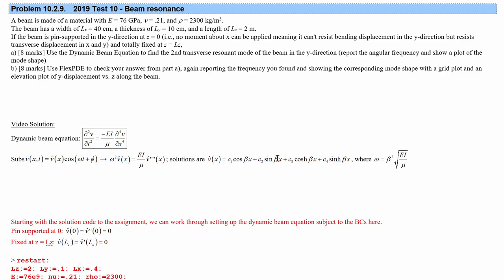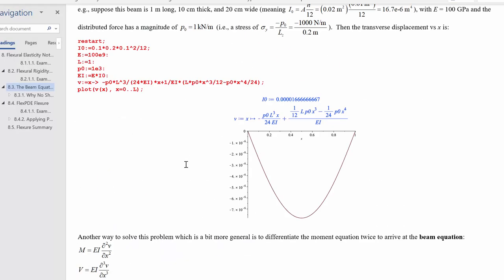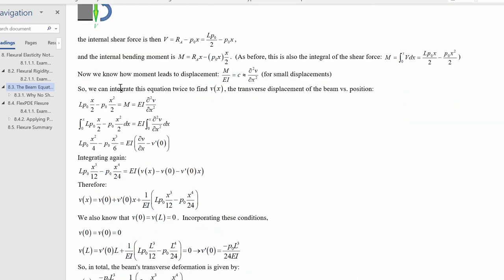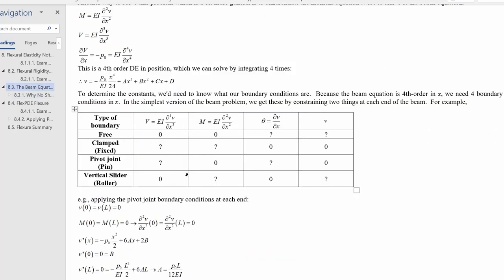This ODE allows us to apply boundary conditions to solve for 3 of the Cs and the betas that will make this work. We don't want to solve for all 4 Cs because that would eliminate flexibility needed when forming a linear combination. The boundary conditions come from the question's support description: pin-supported in Y at Z equals 0, and totally fixed at Z equals Lz. From the beam equation topic 8 summary, we know what each boundary condition means.